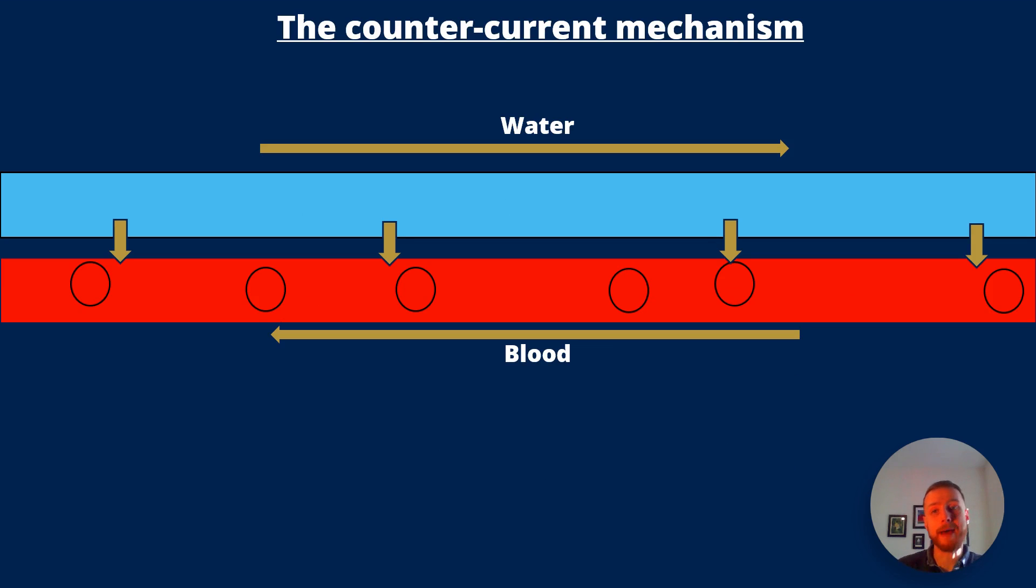Now in the countercurrent mechanism with the water flowing in one direction and the blood flowing in another let's have a look what impact this will have on oxygen absorption. With our 10 arbitrary units of oxygen in the water we're going to have a very different situation because this water isn't meeting blood that's totally deoxygenated. It's actually going to meet blood that's got a little bit of oxygen already. So the blood here will have six arbitrary units of oxygen and the water has 10 so that will equilibrate at eight. Then we've got eight in the water. That's going to meet blood that's got four. So it'll equilibrate at six.